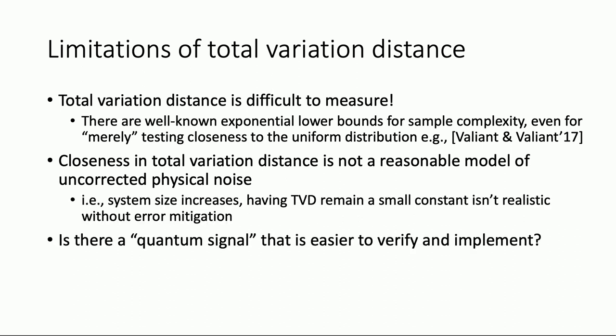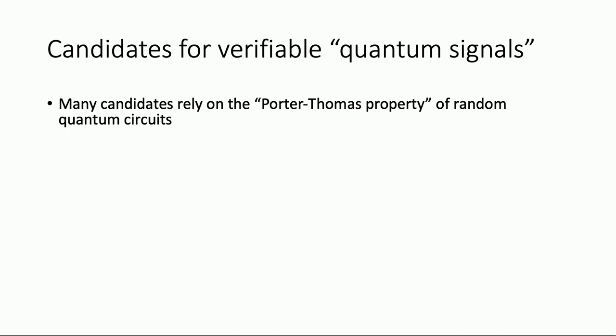What's really natural to ask — and I think the starting point for these benchmarks — is precisely this question: is there a quantum signal in random circuits that's somehow easier to verify and easier to implement, that might make more sense for a noisy experiment? Now, almost all of the candidate benchmarks rely on a property of random circuits which we're going to call the Porter-Thomas property — a property of ideal random circuits.